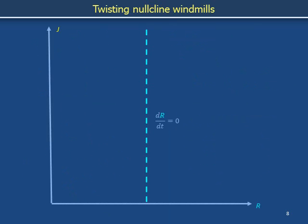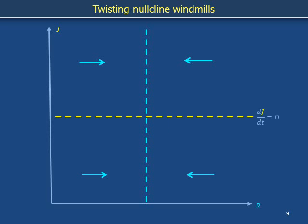Suppose the direction field for Romeo's dynamics includes a vertically oriented nullcline. Along this line drdt equals 0, meaning nowhere on this line can the system have horizontal motion. To the left drdt might be positive, meaning motion toward the right, and to the right we might have negative values of drdt, meaning motion toward the left. This nullcline is an example of a sign change where the blue arrows momentarily have no length as they switch directions. Suppose that the direction field for Juliet's dynamics includes a horizontal nullcline above which we have negative values of djdt, meaning downward motion, and below which we have positive values of djdt, meaning upward motion.